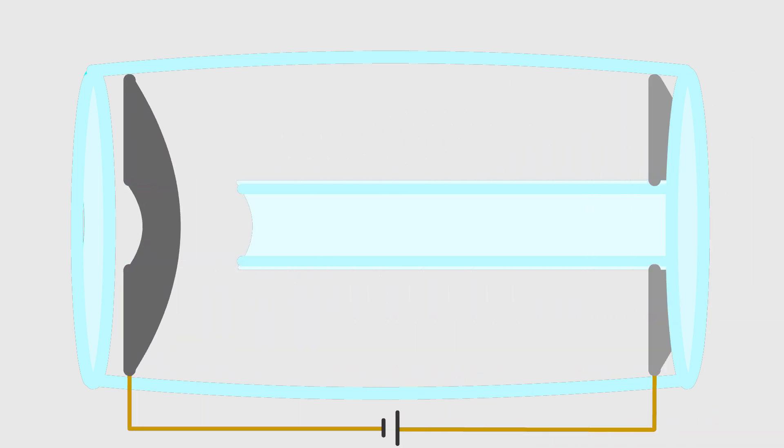Electrodes connected to the ends of the laser tube are linked to an electrical discharge system to energize the gas mixture. This system creates an electric field along the tube, ionizing the gases. The electric field elevates helium atoms to their metastable energy levels, triggering the excitation of neon atoms through energy transfer.